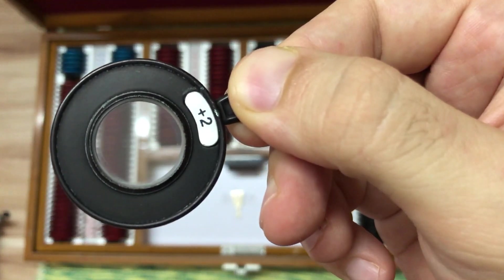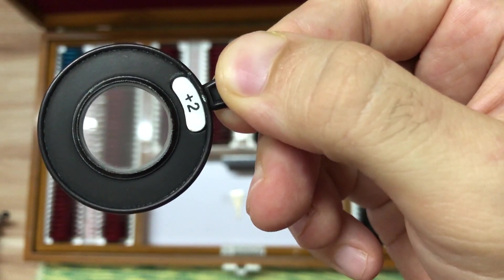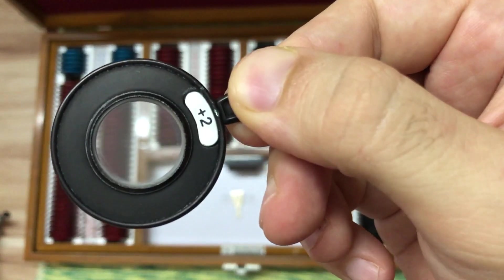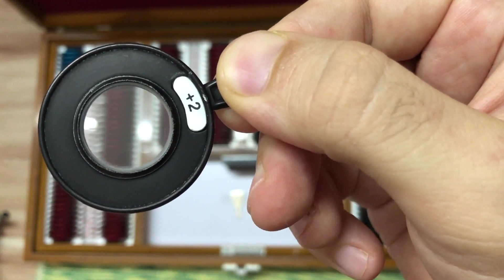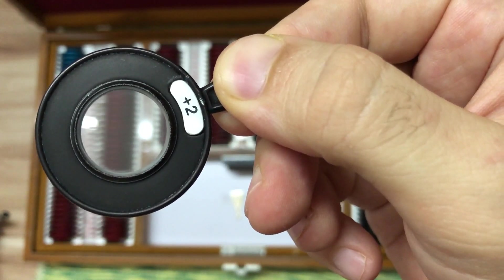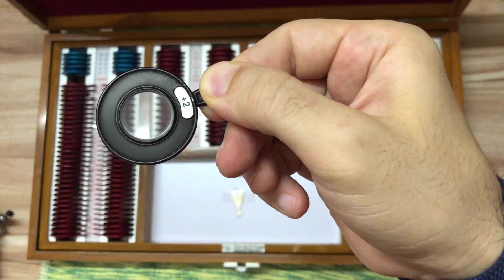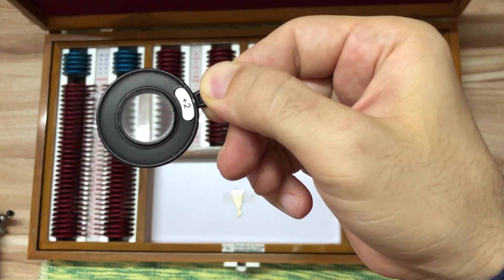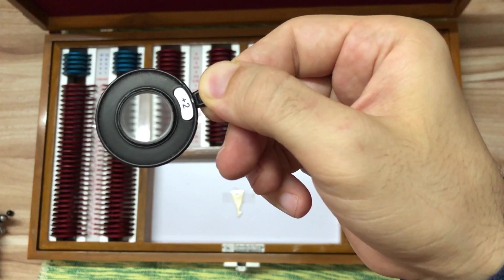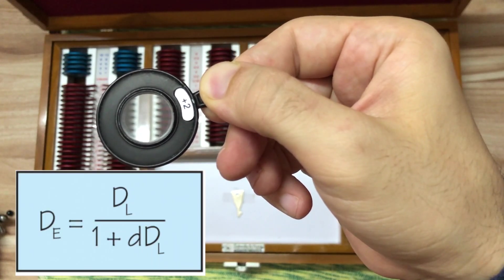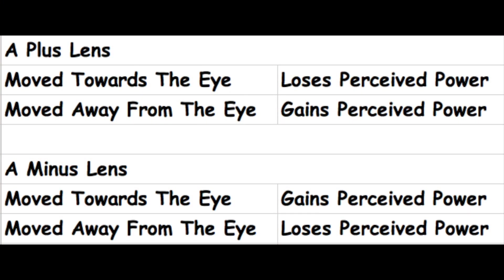Increased vertex distance increases the power of plus lenses and in turn increases the magnification they cause. For example, when a lens is held at the optimum vertex distance of approximately 13 mm, its power is +2 diopters. When moved farther from the eye, its power gradually increases to around +2.5 or +3 diopters. The vertex distance formula is needed to calculate this, so you should always keep any lens as close to the eyes as possible.